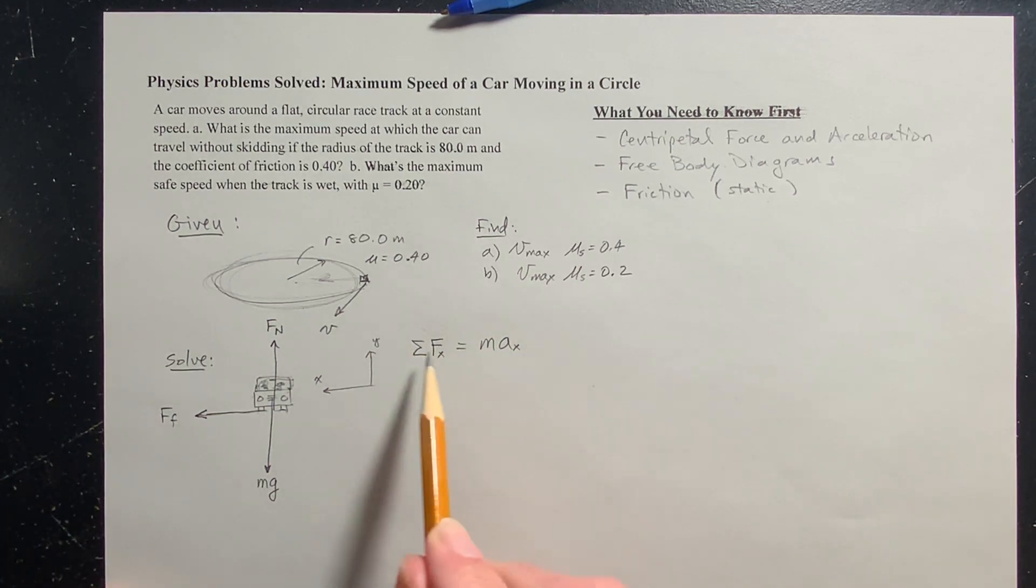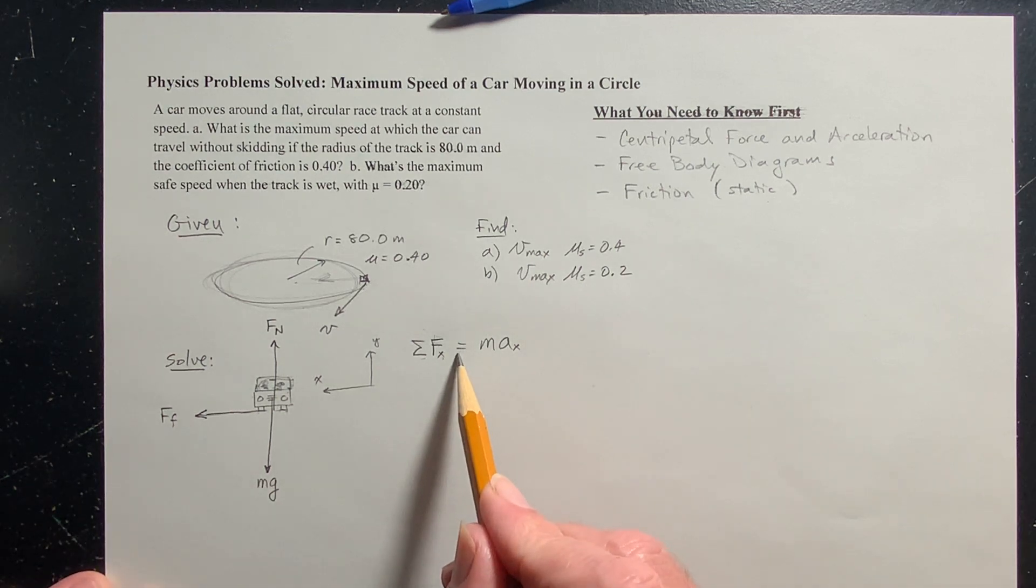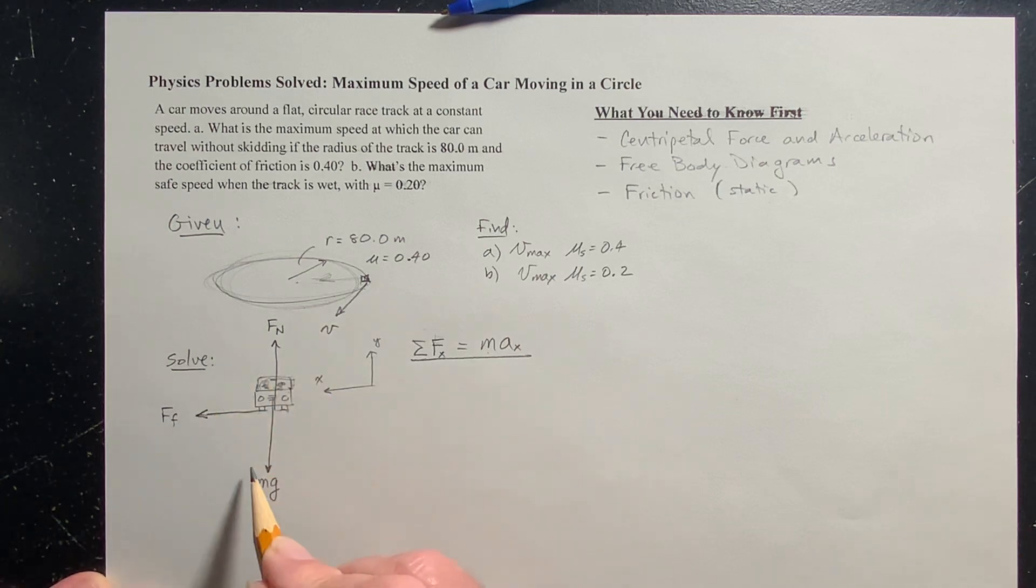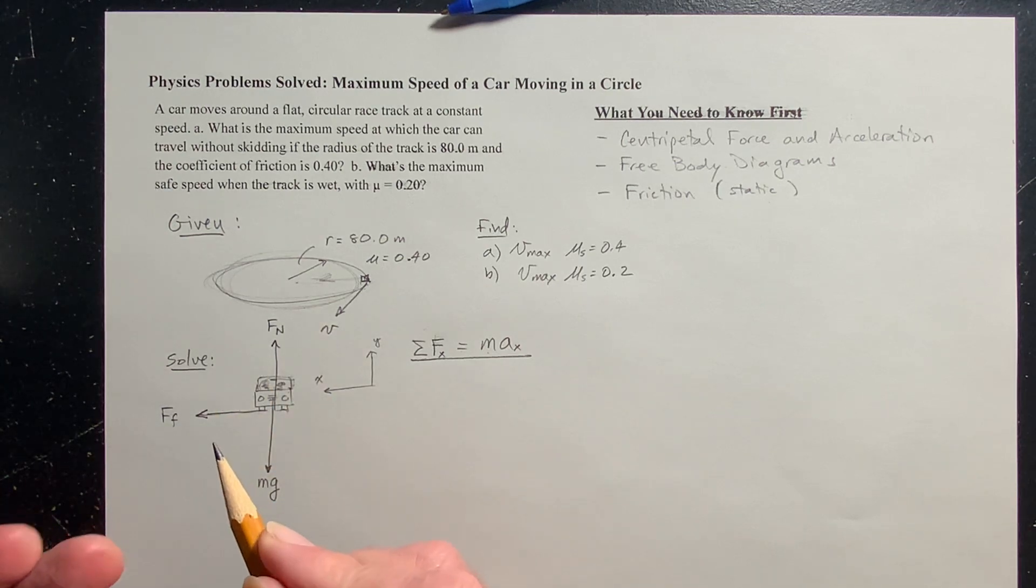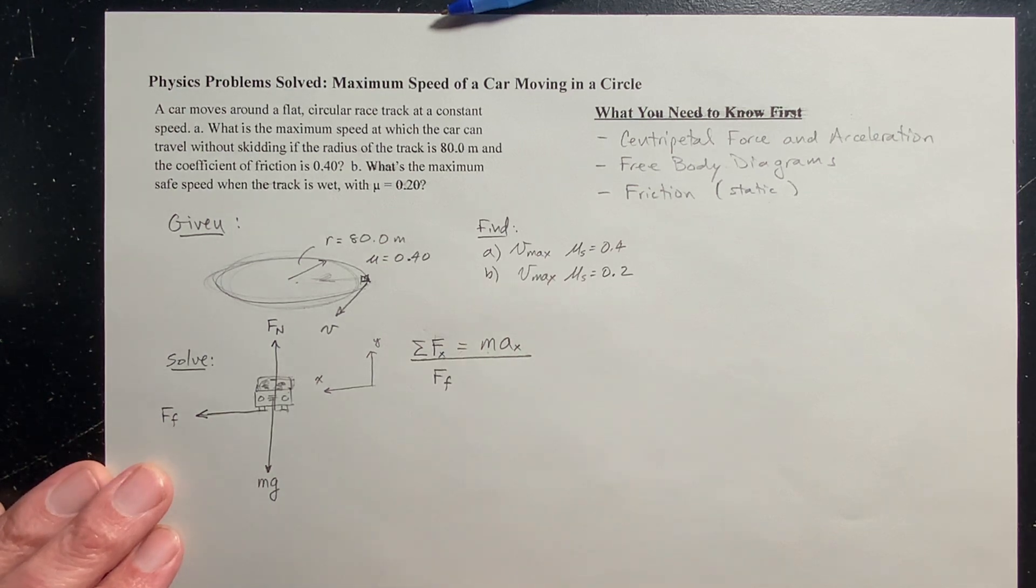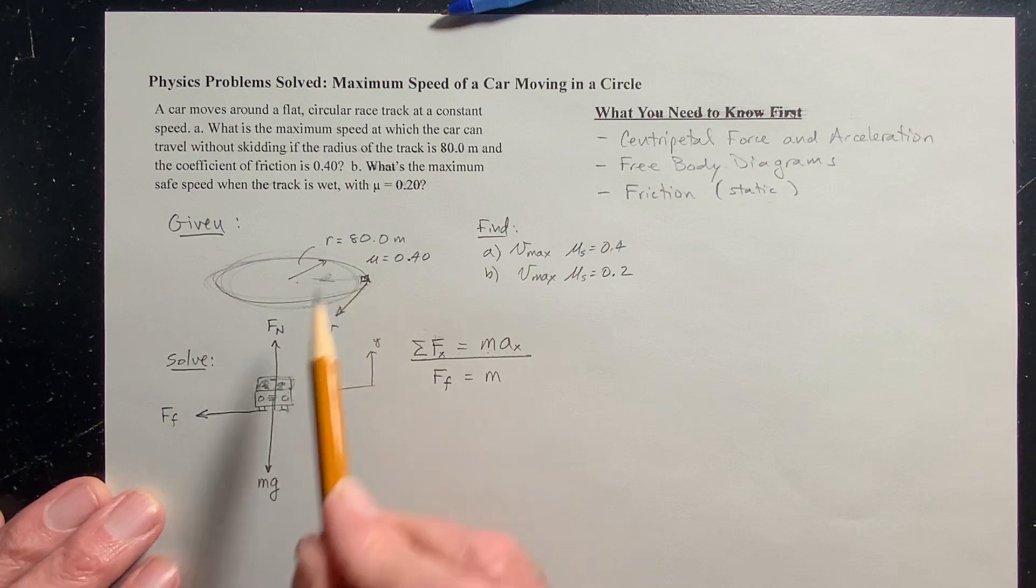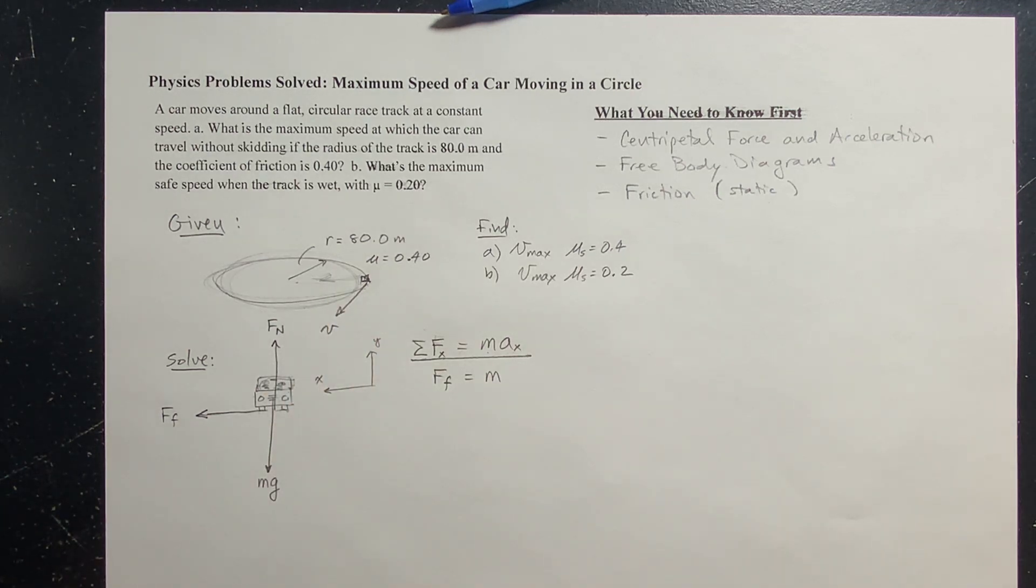This is the summation notation. We're adding up all the forces in the x direction. That's the net force. And the net force equals mass times acceleration. Now let's look at my free body diagram. I've only got one force in the x direction, and that's the force of friction. That's going to be equal to m times a. But what is the acceleration?